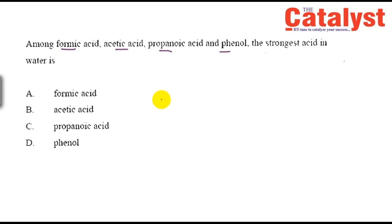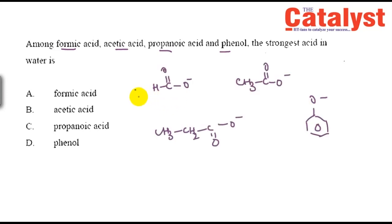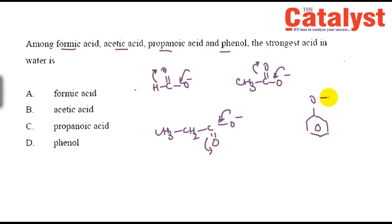The acidity of an acid in water depends on the stability of its conjugate base (anion). A more stable anion means a more acidic acid. Formic acid gives the formate ion, which is resonance-stabilized. Acetic acid also gives a resonance-stabilized anion.